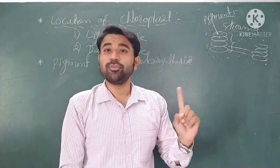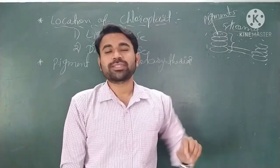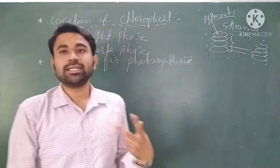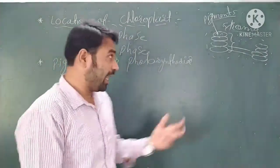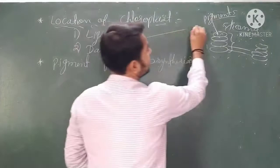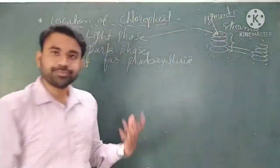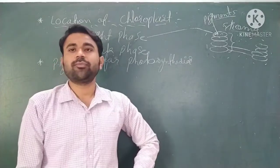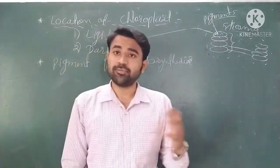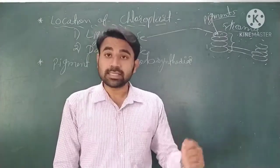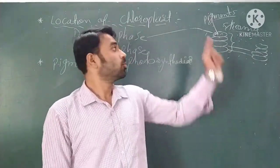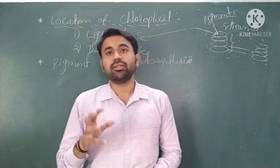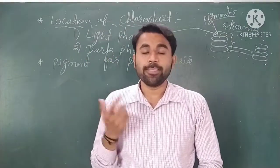The pigments absorb the photon of sunlight, so obviously the light phase occurs in the thylakoid. Because the pigments are present in the thylakoid and they absorb the sunlight, the light phase of photosynthesis happens in the thylakoid.